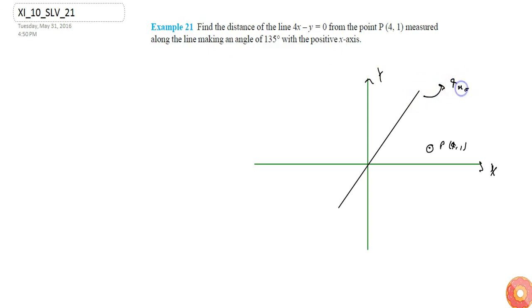And since it is given that we need to find out the distance of the line 4x minus y equals zero from the point P(4, 1).